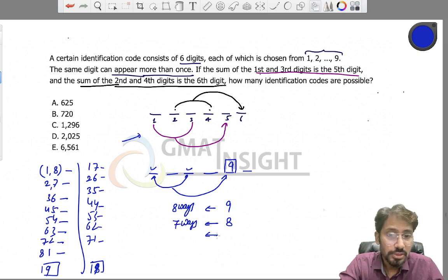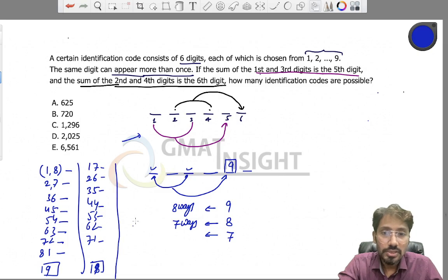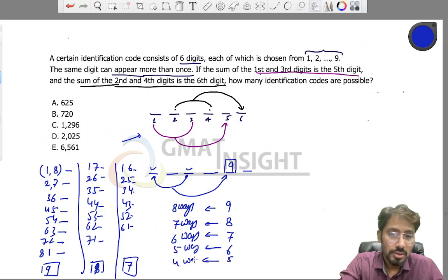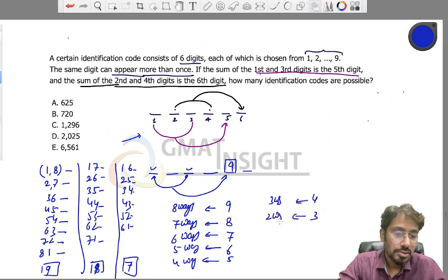There is a pattern emerging. If I fill the fifth place with digit seven, I have six choices. If the place is fixed by digit six, there are five ways. Likewise, five gives four ways, four gives three ways, three gives two ways, and two gives just one way.